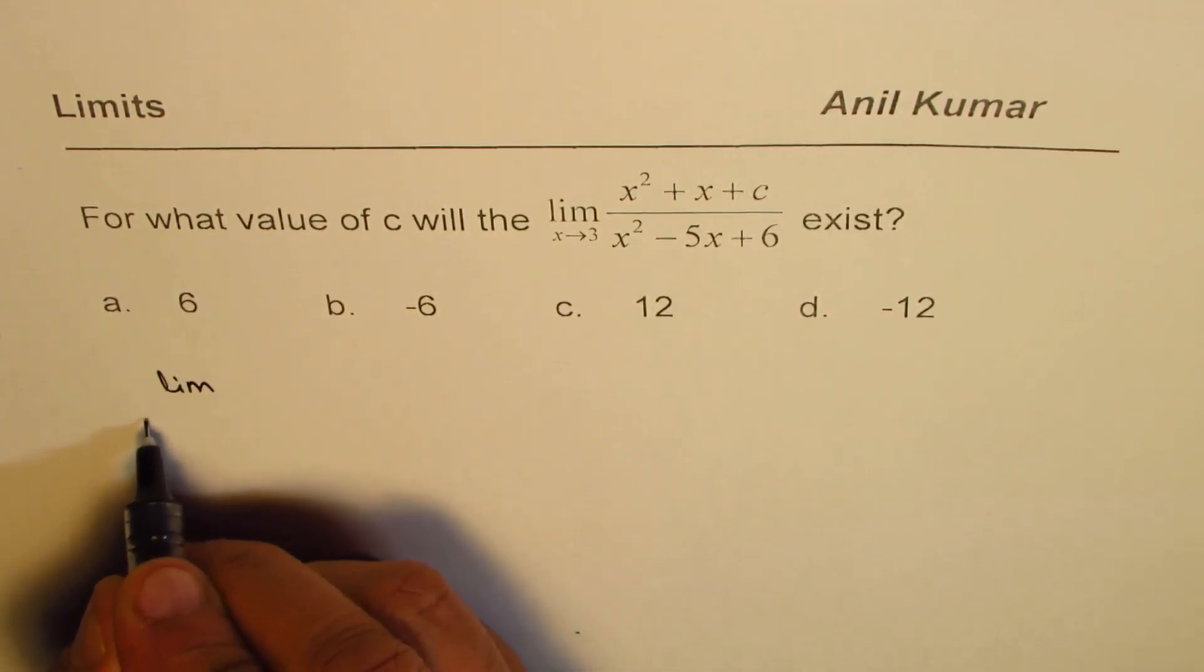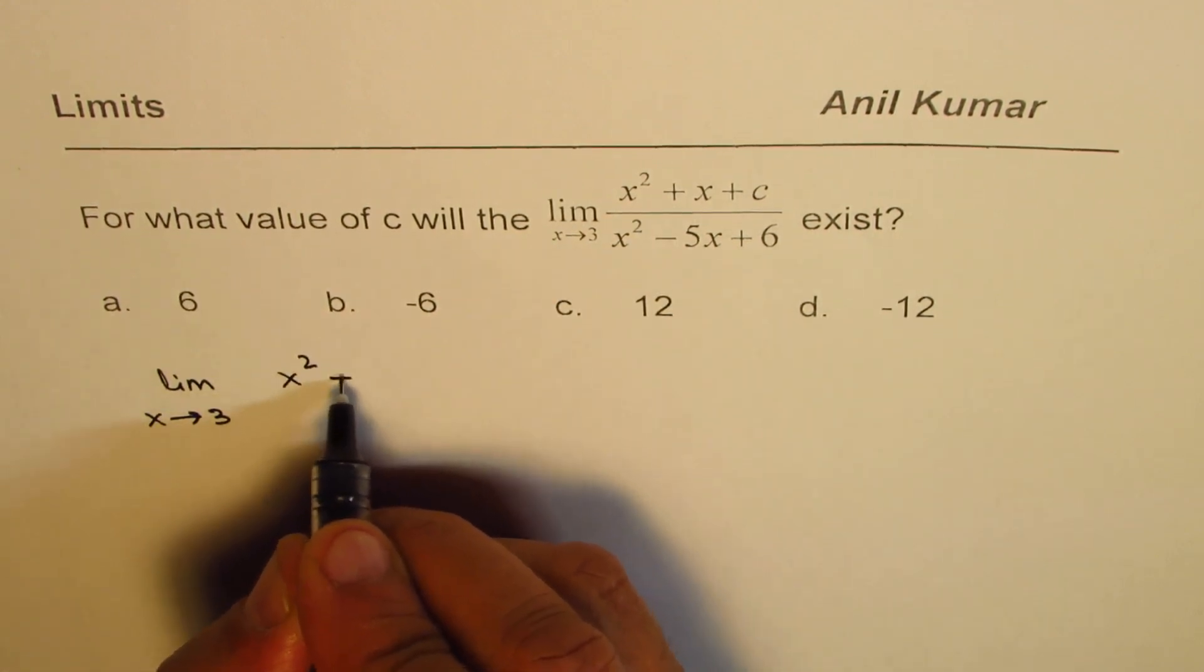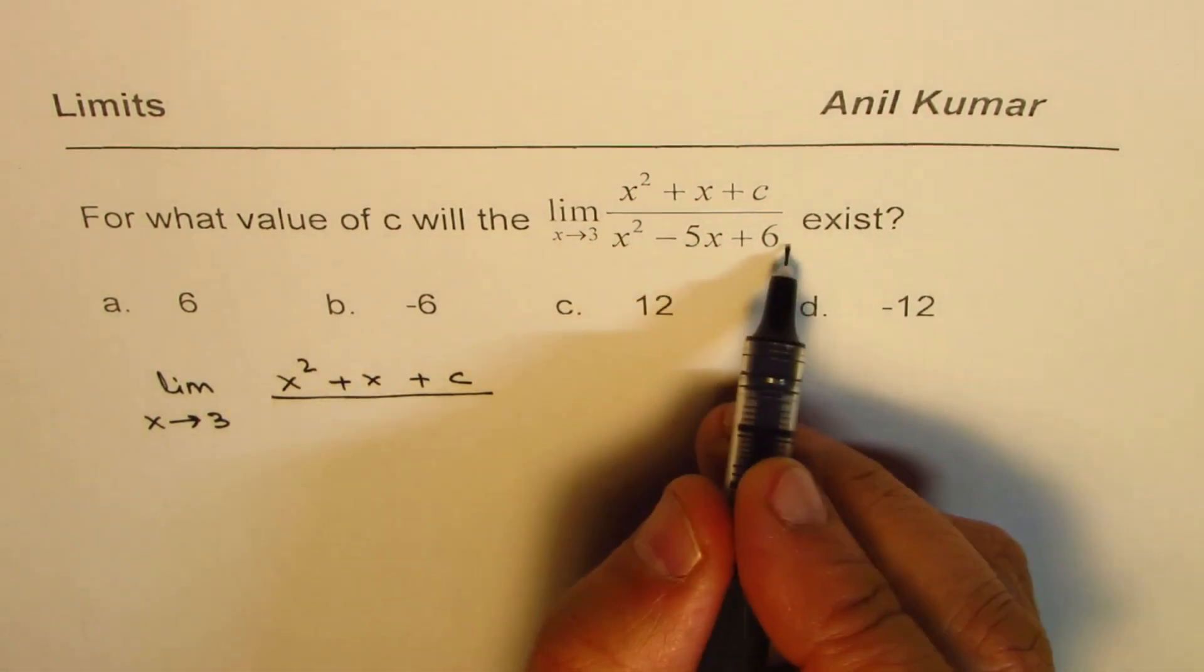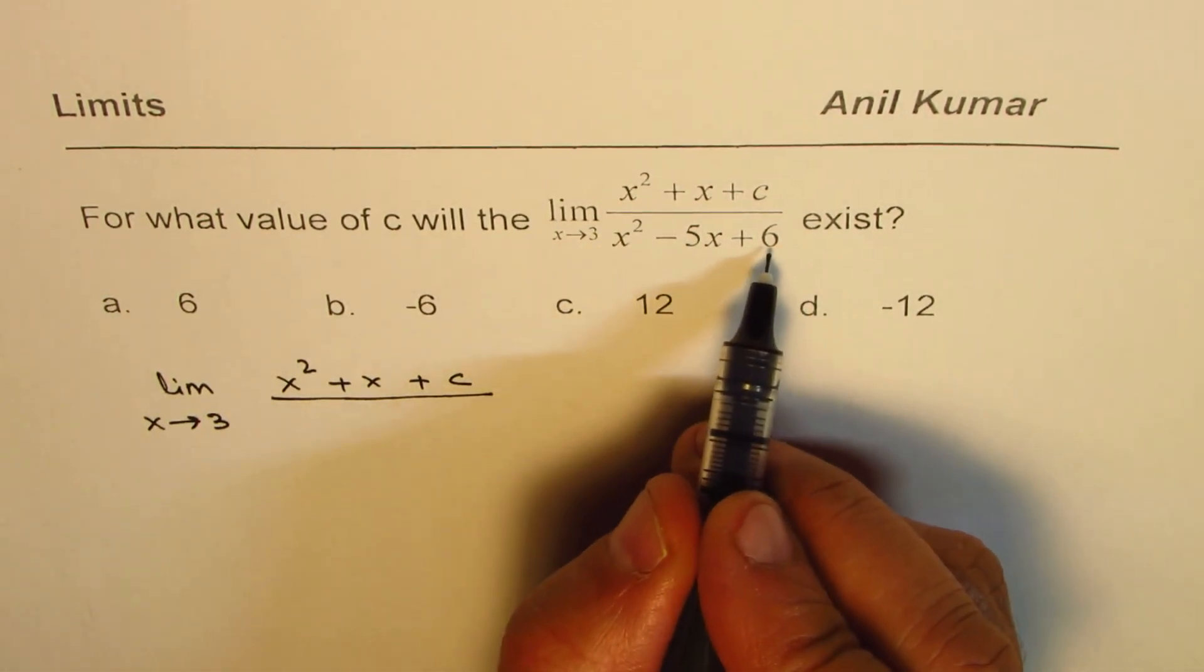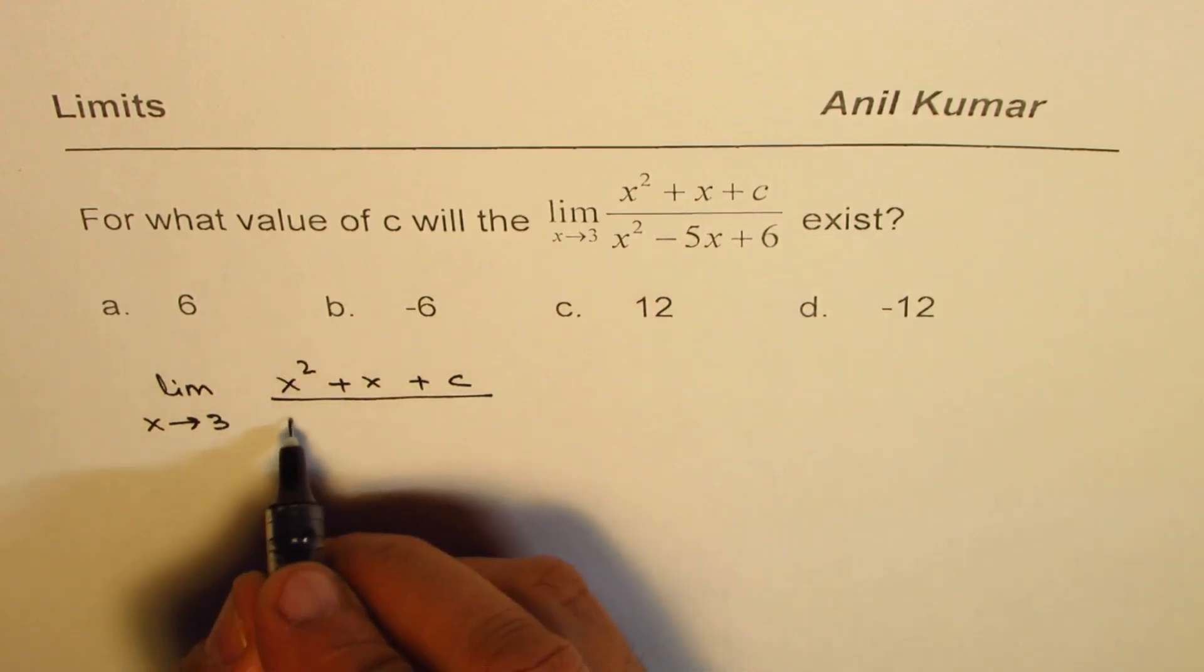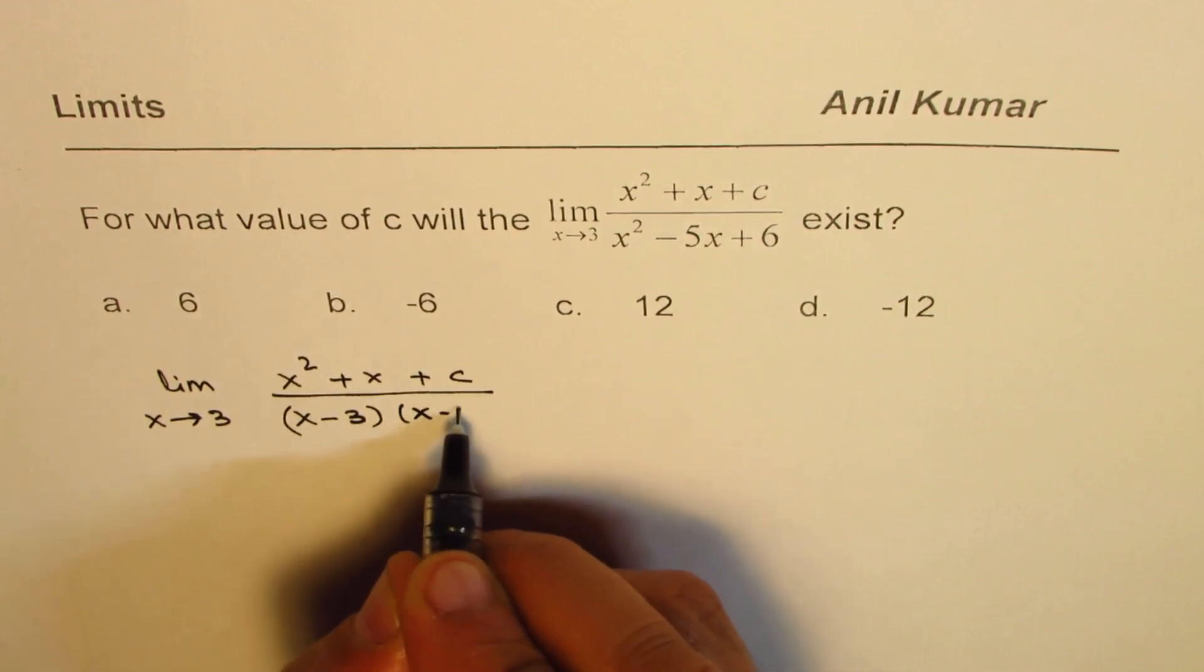Let me rewrite this. We can write this question as limit x approaches 3, numerator is x squared plus x plus c and the denominator can be factored. We are looking for a product of 6, sum of minus 5, so 3 and 2, both negative. So it would be x minus 3 times x minus 2.